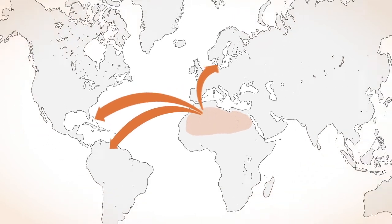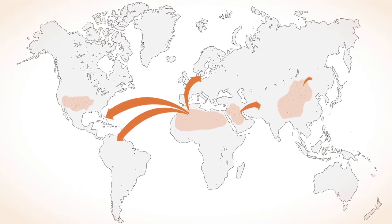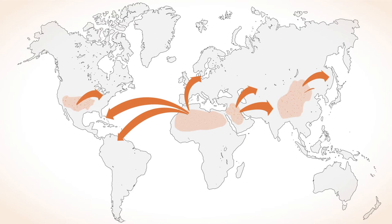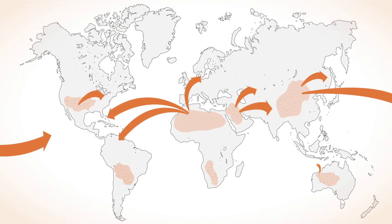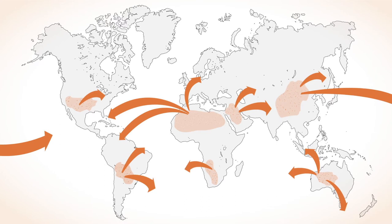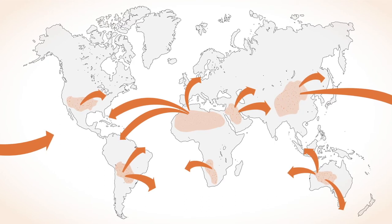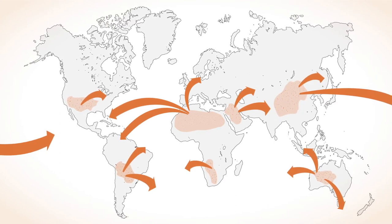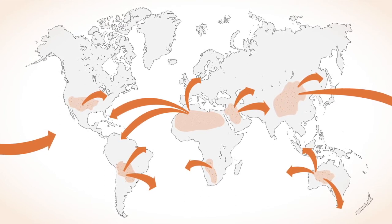The main deserts are found in the Dust Belt in the Northern Hemisphere. But there are many other active sources of dust around the world. And, in fact, dust transport is a global phenomenon.